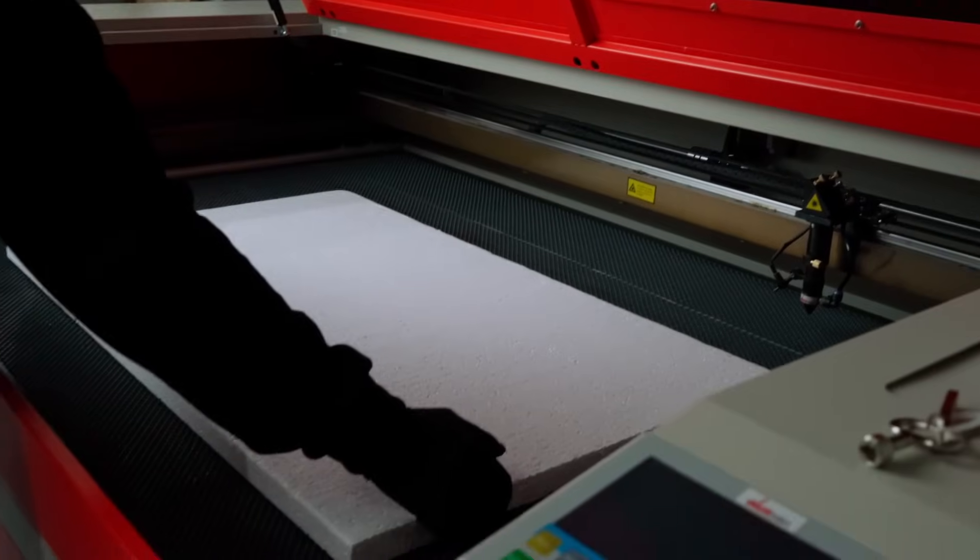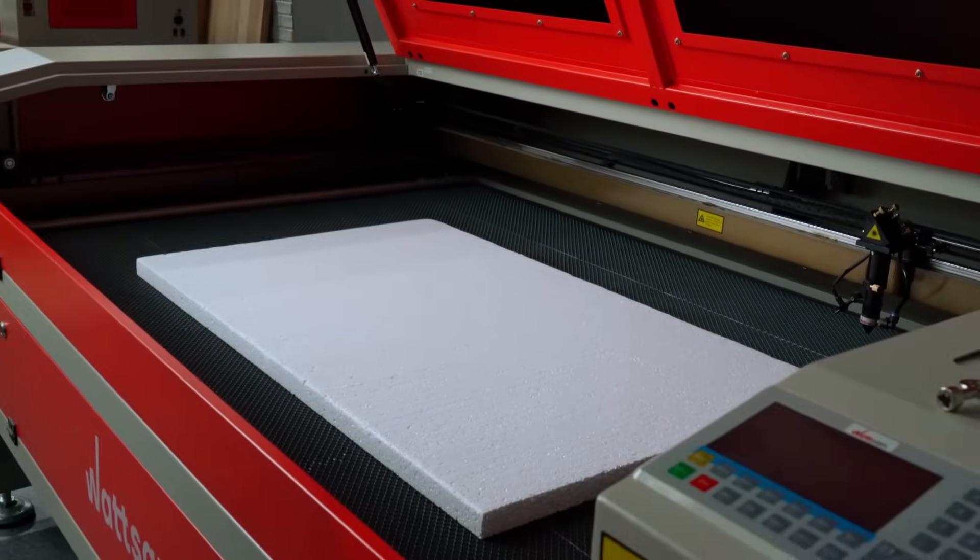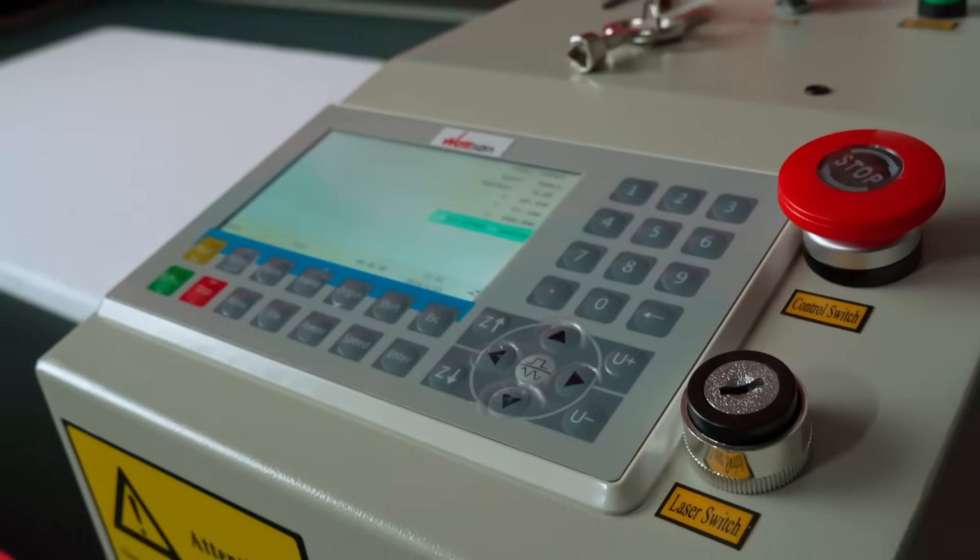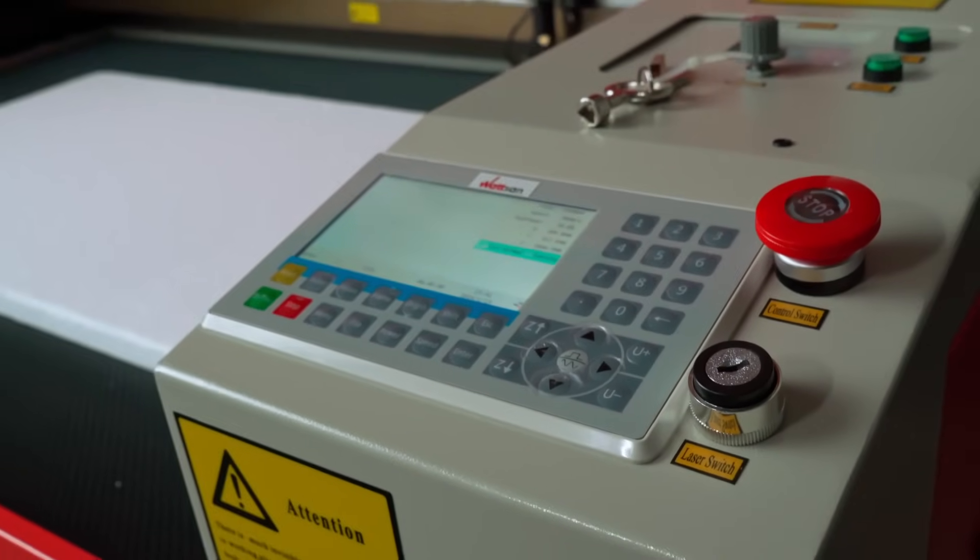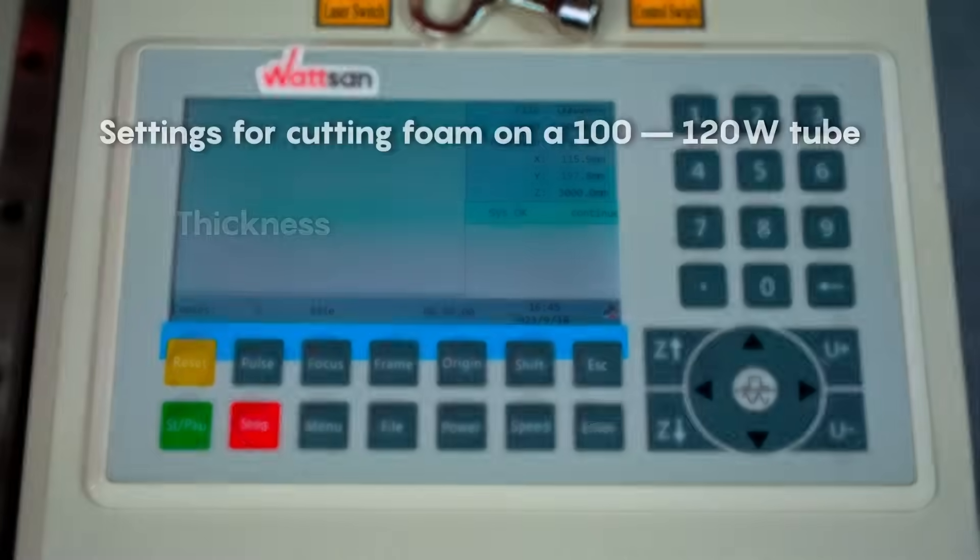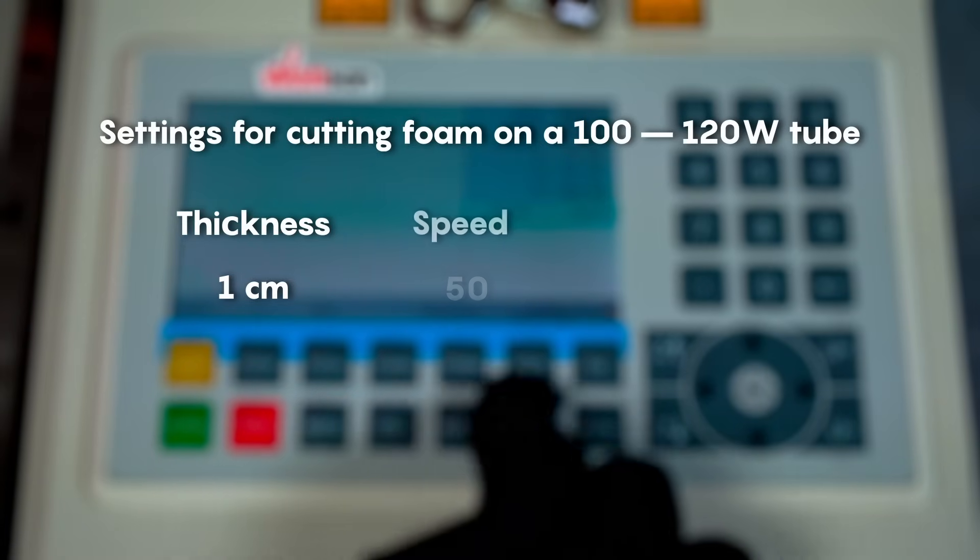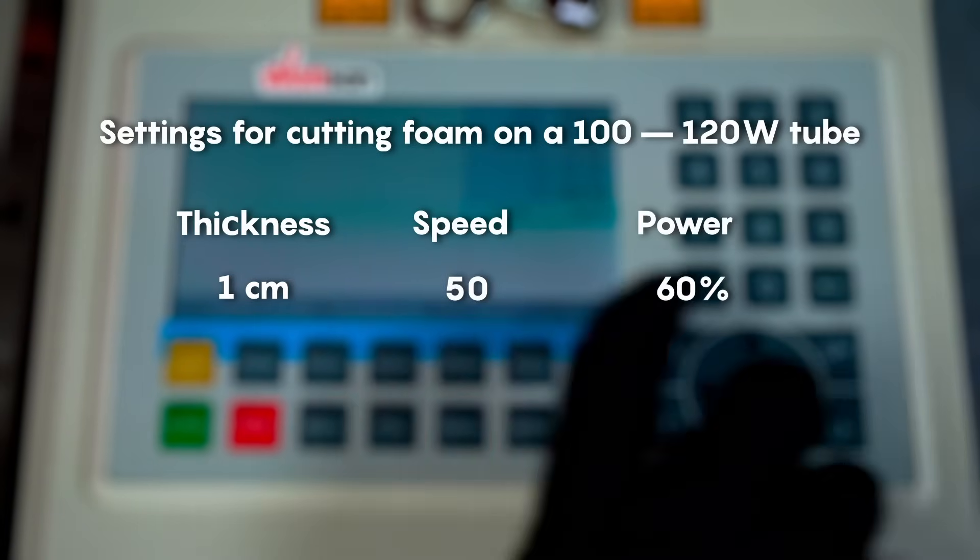Now let's look at the settings for cutting foam on a 100 to 120 watt tube, which a 1610 might have, and adjust the settings to suit us. For cutting 1 centimeter, we need the following settings: Speed 50, Power 60%.